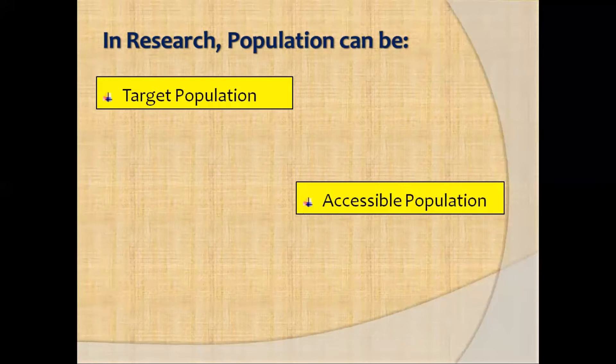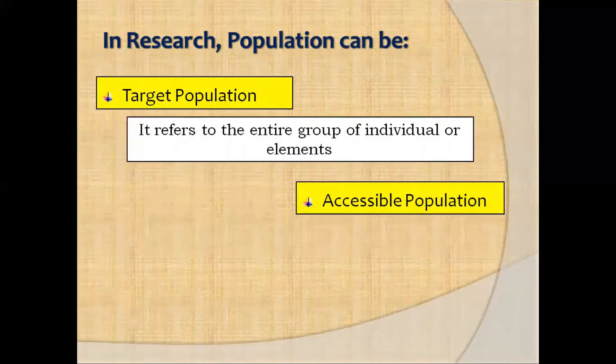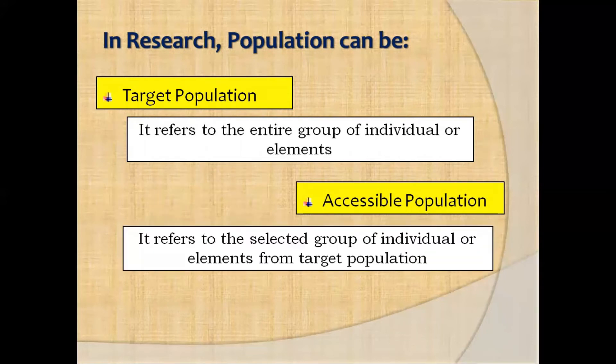In research, there are two types of population that need to be clear right from inception: target population and accessible population. Target population, as the name suggests, is the population that is targeted by the researcher for data collection. Therefore, target population is a type of population where the entire group of individuals or elements is taken into consideration for the study.